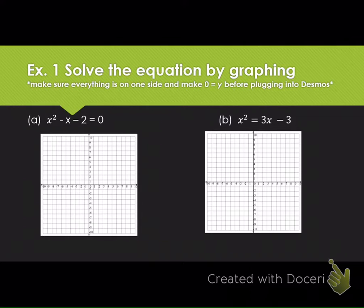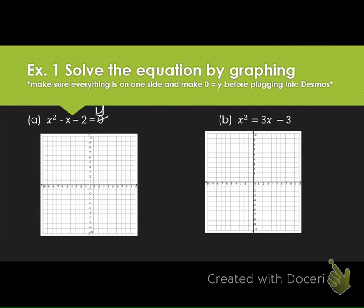For letter A, everything is already on one side and set equal to zero. Just make sure when you plug this into Desmos that you replace the zero with a y. When I look at the graph, I can clearly see where it crosses the x-axis twice. I'm going to plot the point negative one, zero, and the point two, zero, and label both of these points.